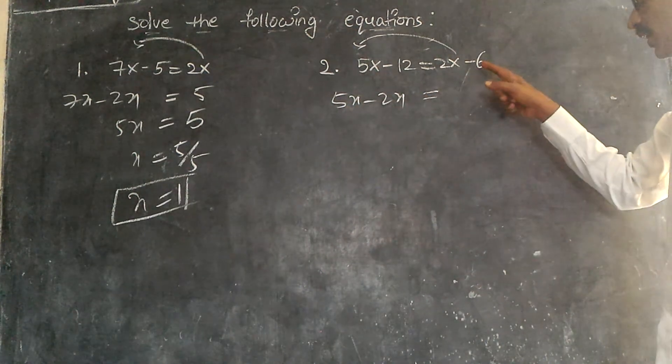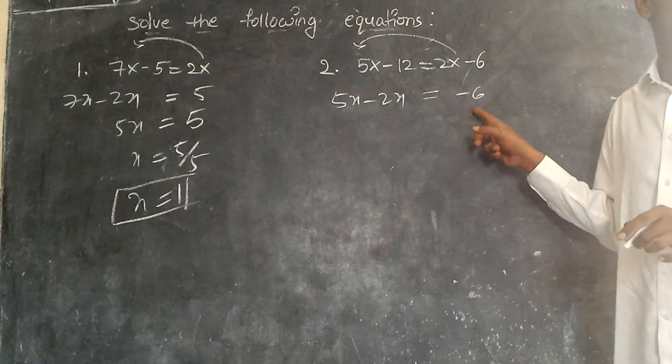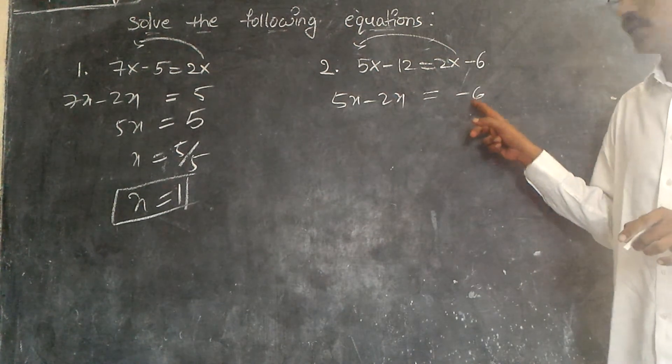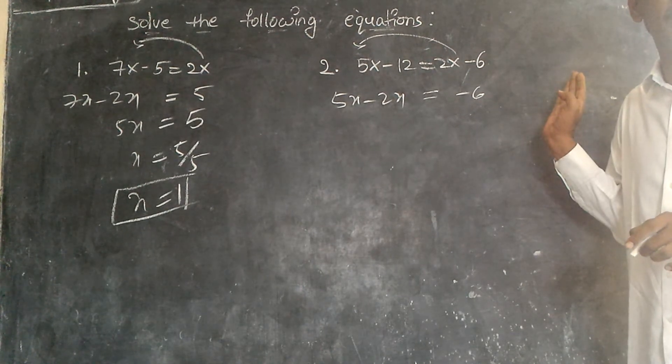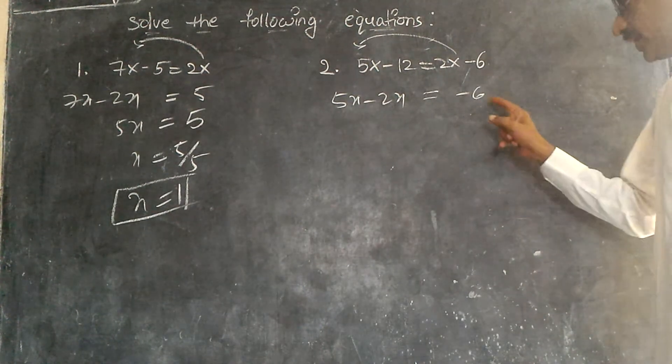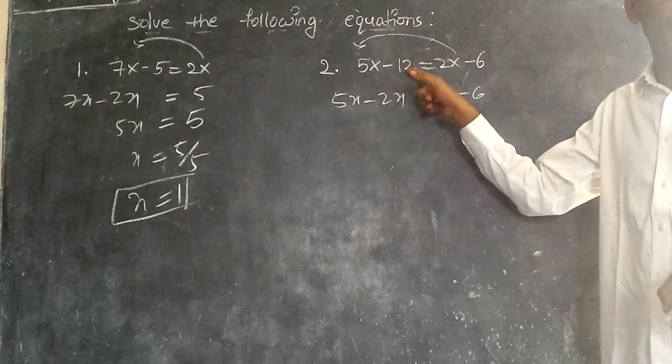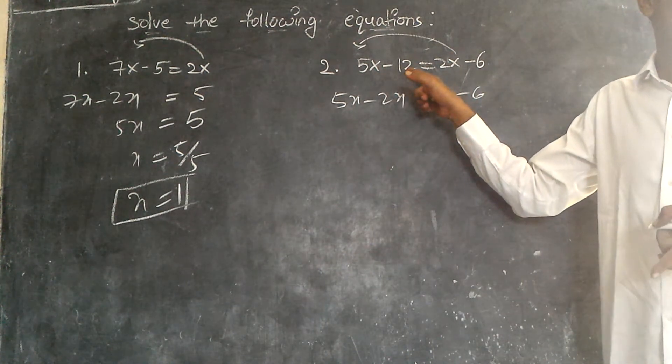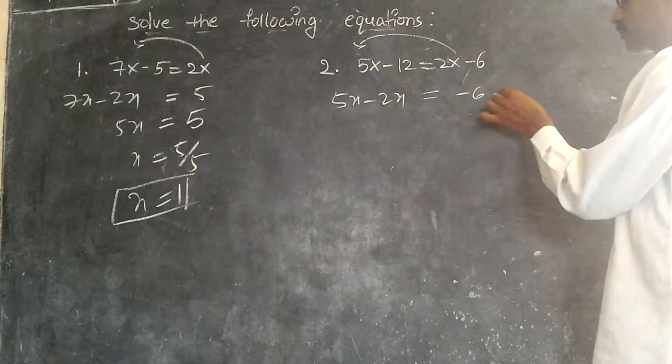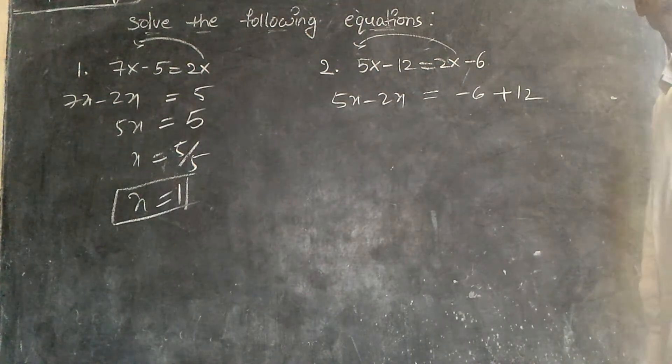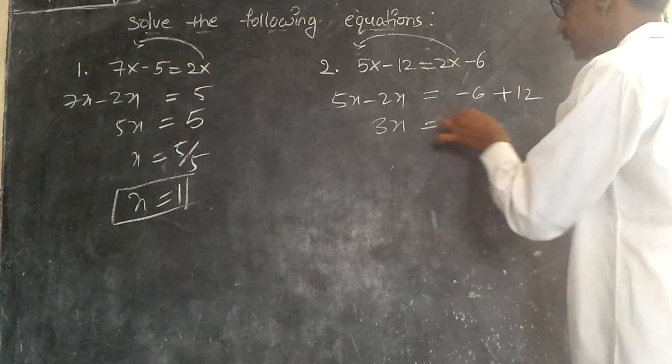So 5x minus 2x. Here already we have minus 6. It is not transposing. It is here only. It is in right hand side. But minus 12 here, it is in left hand side. By transposing this, this is plus 2x. 5x minus 2x, 3x.